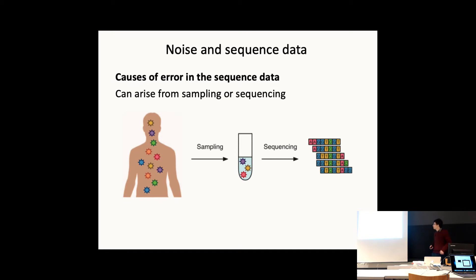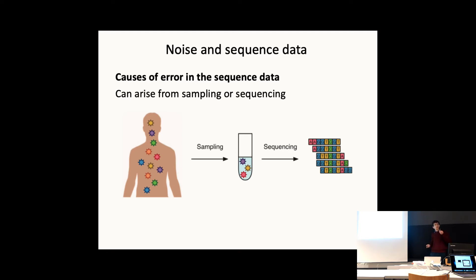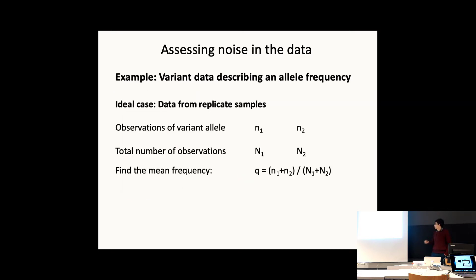But it's more complicated than that. There are two sources of noise. First, a person infected with many different viruses: you collect a nasal swab — say from the right nostril — but you don't necessarily know whether the sample is fully representative of what's in the host. If you'd swabbed the left nostril, the viral population might differ. Second, when you do sequencing you get noise and error in the data, some measurable and some not.